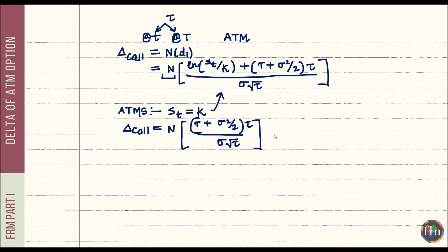We know r is positive and σ is positive, so the term inside the bracket is strictly positive. This means if you apply the rule of thumb that delta of an at-the-money call is 0.5, that's not exactly what this expression is telling us.